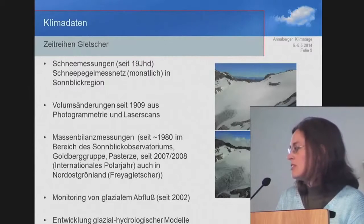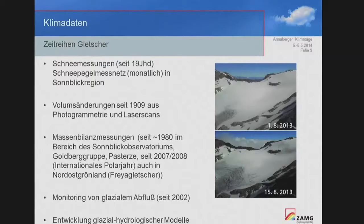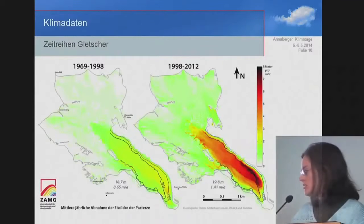What is also important for Austria is snow and glaciers. We measure snow levels on a monthly basis. Since 1909, volume changes have been determined — formerly by photogrammetry, now with laser scans. Mass balance measurements have been made since 1980. Since the International Polar Year, we also have observations in northeast Greenland. Glacial discharge has been monitored since 2002 and we are now developing glacial hydrological models to represent the changes.